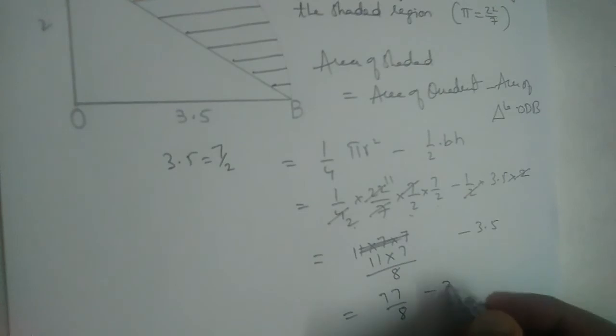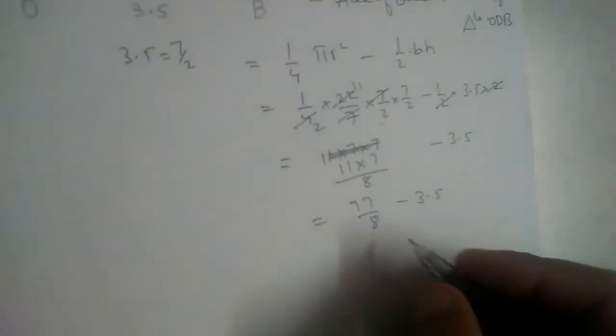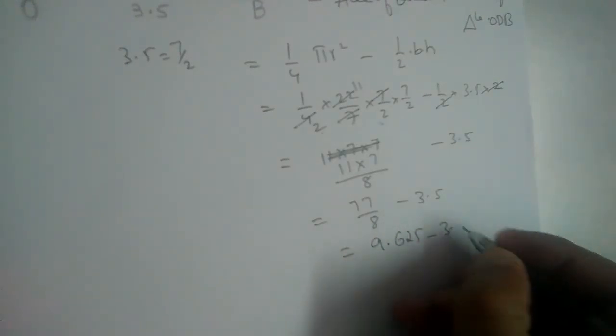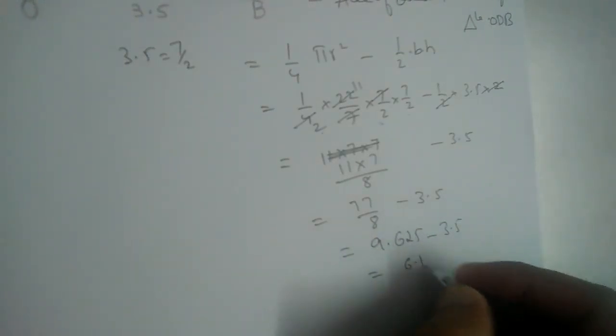77 by 8 minus 3.5. So 77 by 8 will give us 9.625 minus 3.5, which equals 6.125.